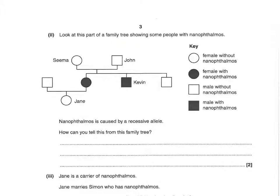Next question says, look at this part of the family tree showing some people with nanophthalmos. You can see that there are parents without it, but children with it. This is caused by a recessive allele — how can you tell from the family tree? Remember, a recessive allele is one where if you have the dominant one, that takes precedent over the recessive one. But if you have two recessive ones, one from each parent, then that's what shows. All you have to put for these two marks is that neither Seema nor John have the disorder, but their children do.